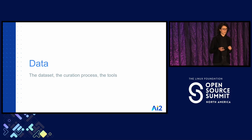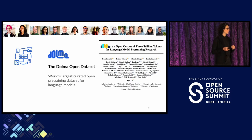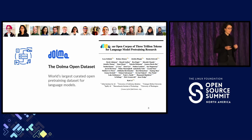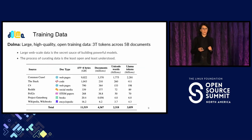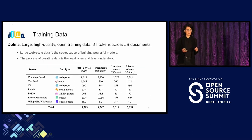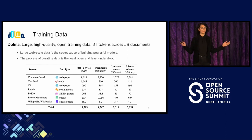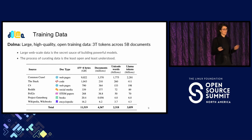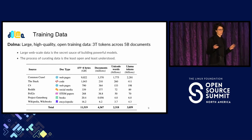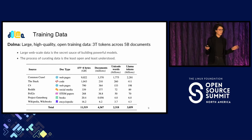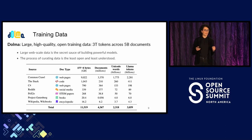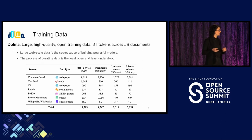Our first stop is data. We have released our training data to build OLMo, which is called Dolma. It is high-quality data. It includes 3 trillion tokens across 5 billion documents. It is largely web data, but it also includes other types of domains, including referential data such as Wikipedia, code from the Stack and Stack Exchange, conversation-like data like Reddit, scientific articles, and so on.